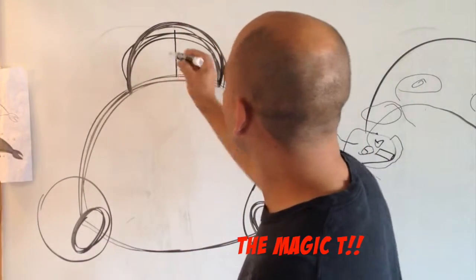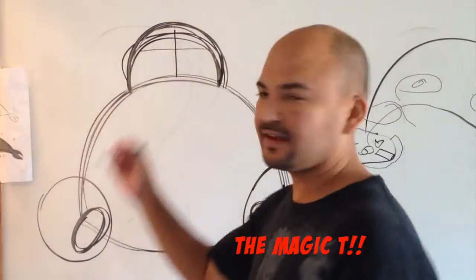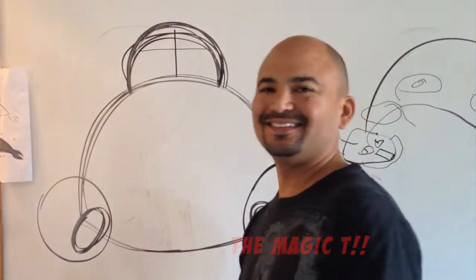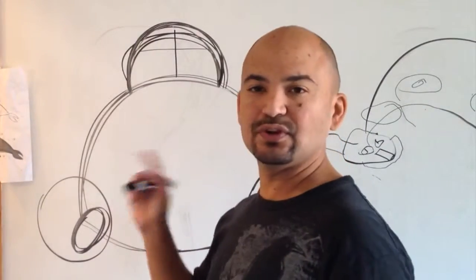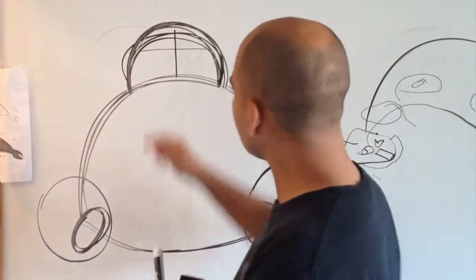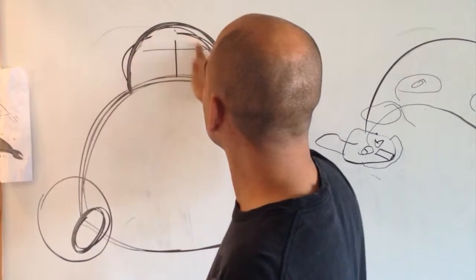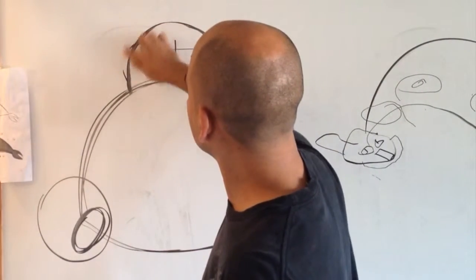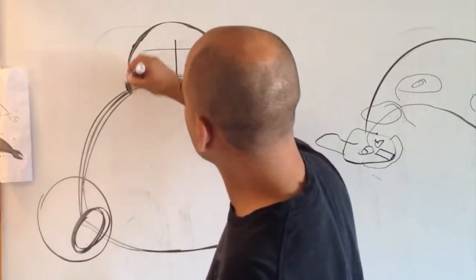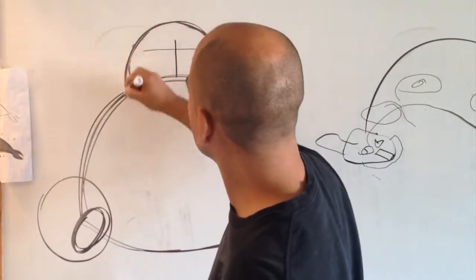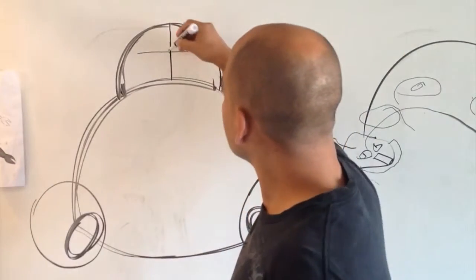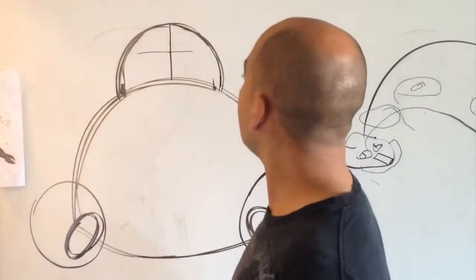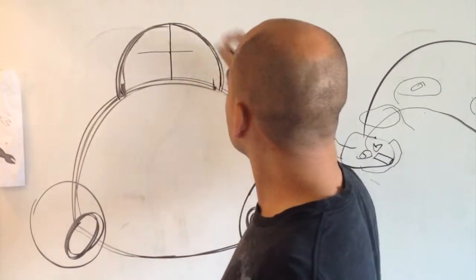And why is it magic? Well, it's magic because you will know where to put all the pieces of this Snorlax's face. So, alright. So we've got his head. Alright. So the first thing we're going to do is make sure the magic tea line goes all the way up to the top of the circle you made.